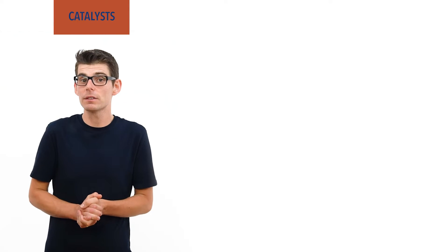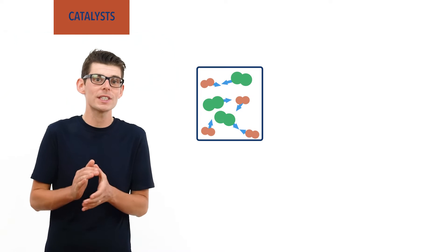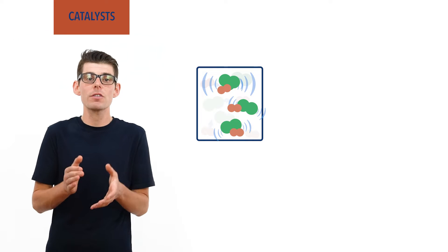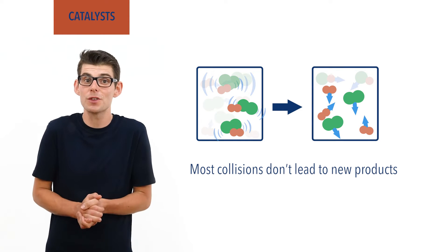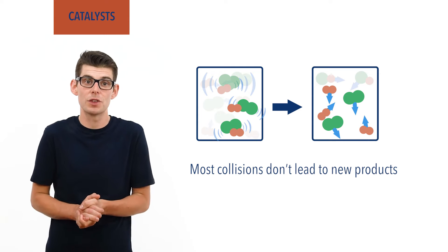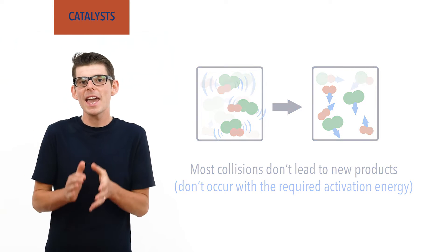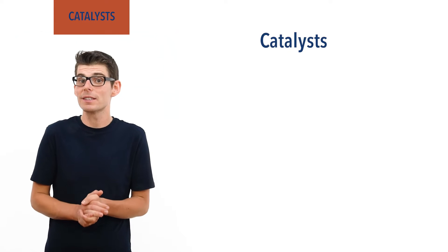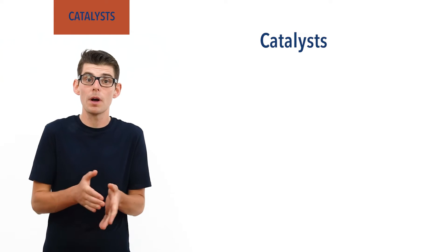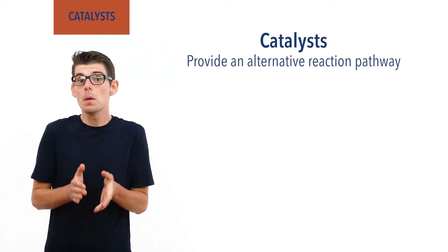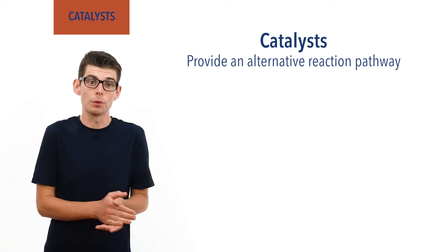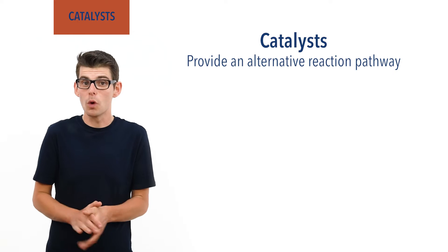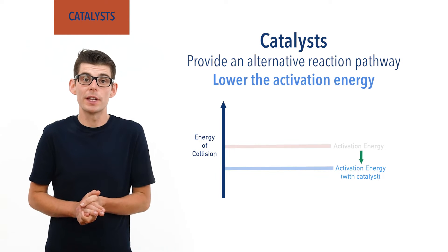Recap done? Let's go! Collision theory tells us that reactant particles are constantly colliding, and the vast majority of these collisions don't lead to the forming of new products, as most particle collisions don't occur with enough energy — the activation energy. A catalyst is a substance that provides a slightly different route or pathway for a reaction to occur, meaning the particles don't have to collide with as much energy in order to react. Catalysts therefore lower the activation energy of a reaction.